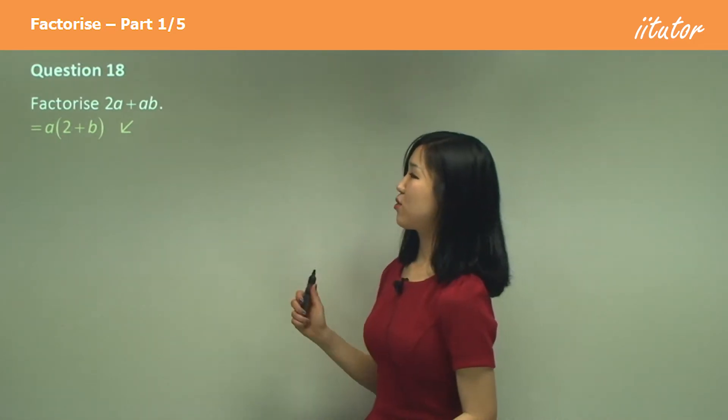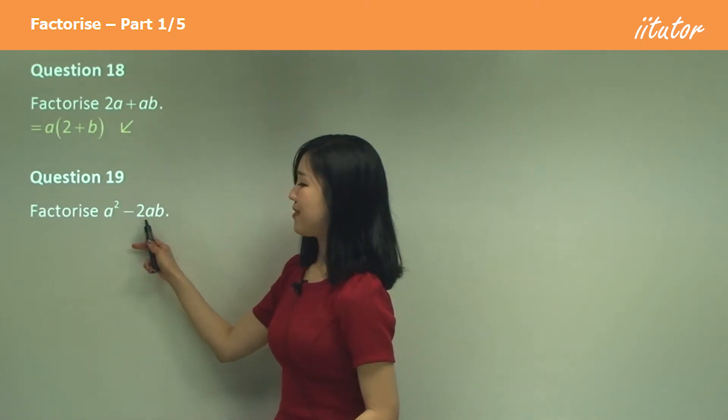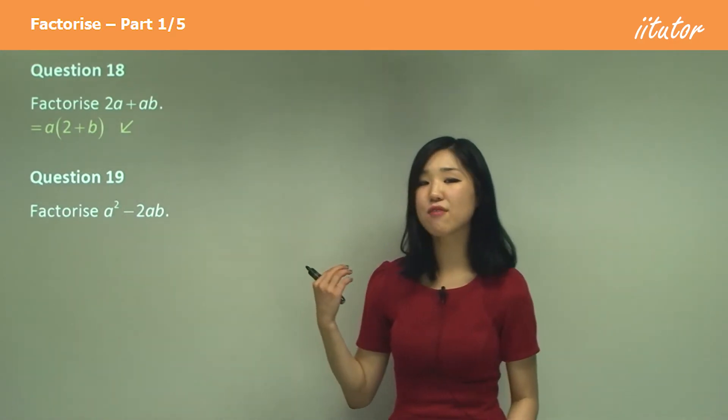Alright, so anything common, just take it out at the front. So that's 18. Question 19: we've got a squared minus 2ab. So ask yourself again, what is the common factor?